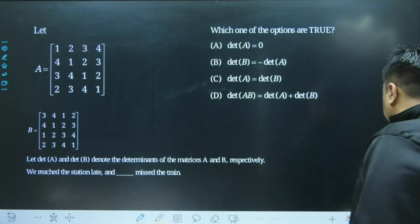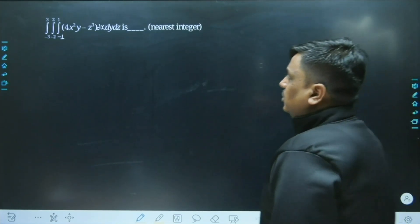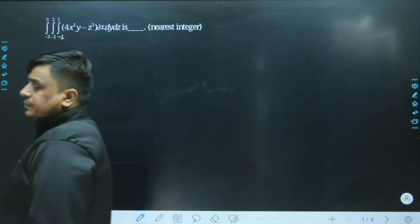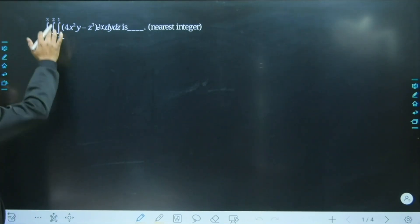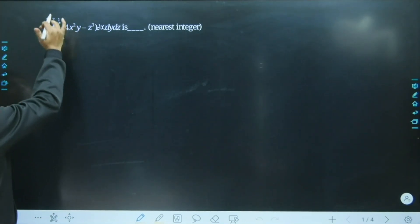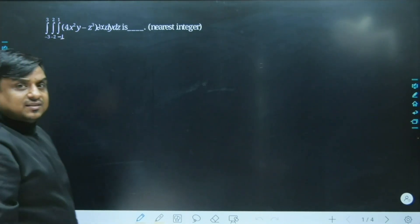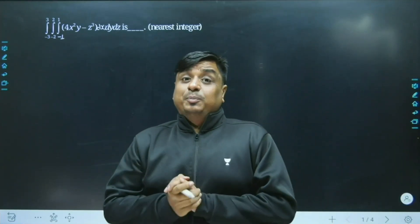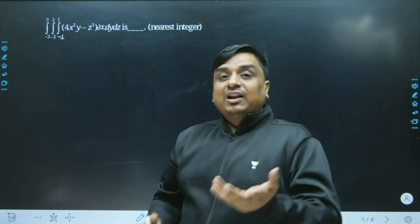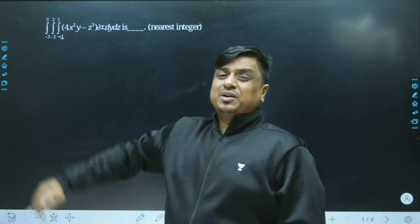Here comes the next question — a problem of triple integration. Although at first look this problem may look scary, it is not that difficult. Once you look at the lower and upper limits, they are always moving symmetrically: minus 1 to 1, minus 2 to 2, minus 3 to 3 — virtually speaking from -A to +A. If after consolidation the function is found to be odd in nature, the value is supposed to be zero.